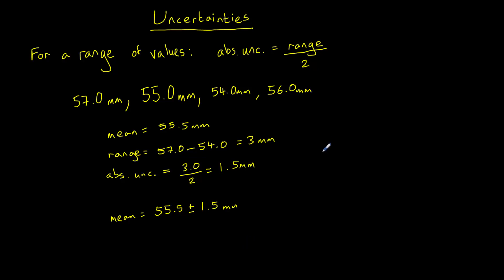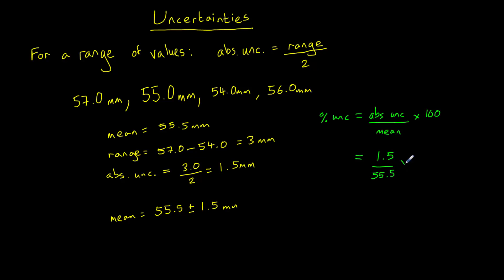What about percentage uncertainty? Percentage uncertainty is always calculated in the same way: we take the absolute uncertainty, divide it by the value (in this case the mean), and multiply by 100. So that gives us 1.5 divided by 55.5 multiplied by 100, which is 2.7%. That's how we find the absolute and percentage uncertainty from a range of values.